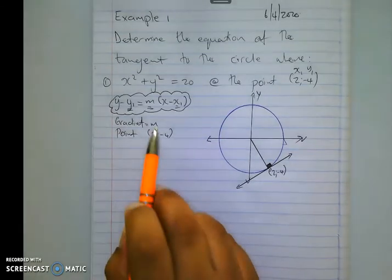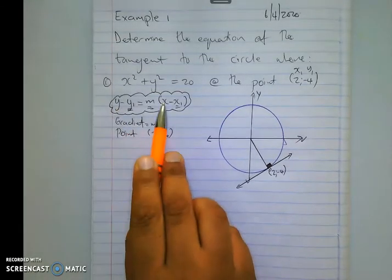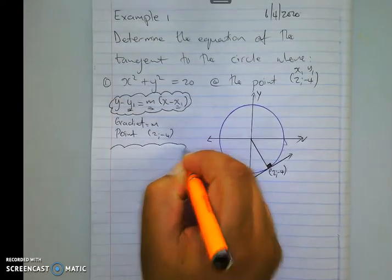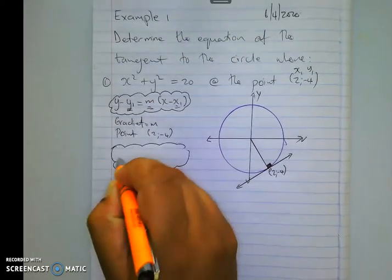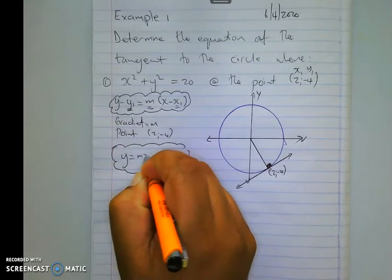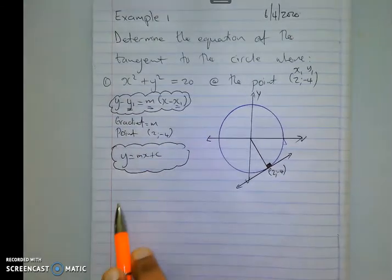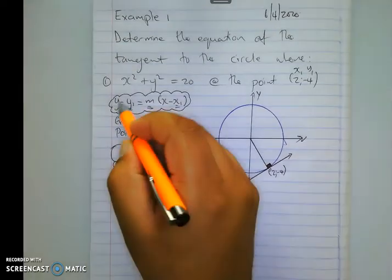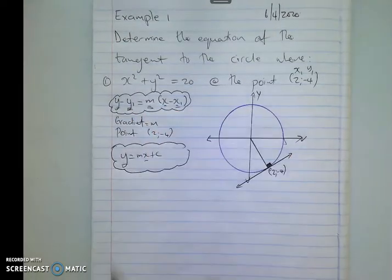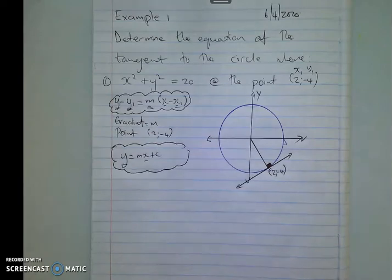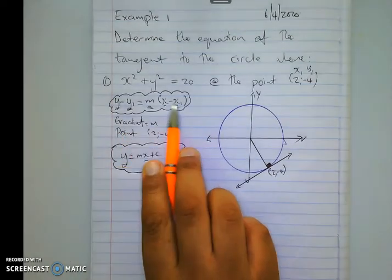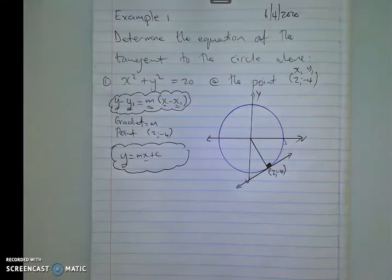If you have any concerns about that y and that x there, don't worry, that's part of the answer, because your final answer will be written as y equals mx plus c. So in your solution there must be a y and there must be an x. That is why we only substitute into y₁ and x₁.